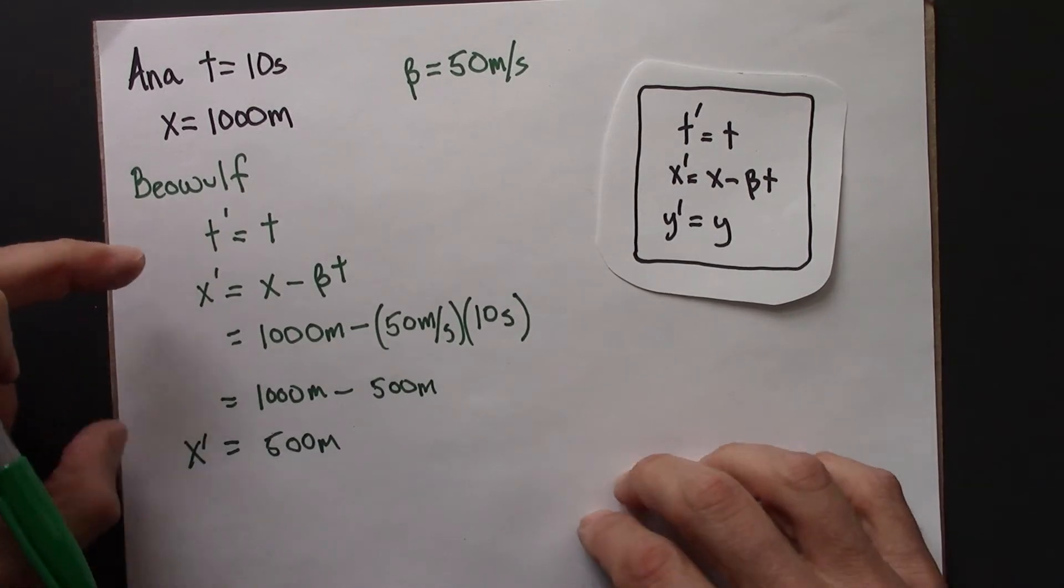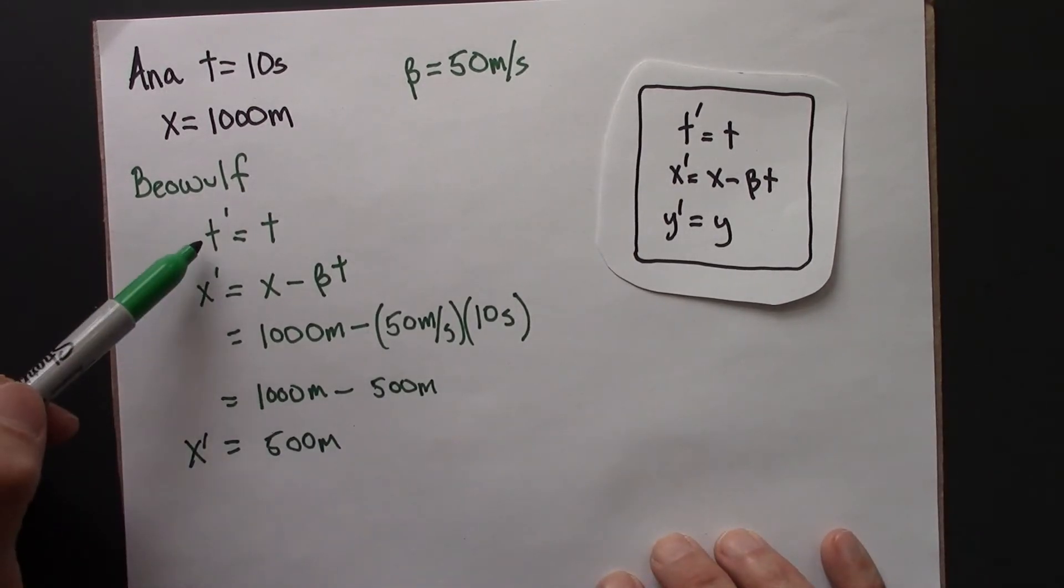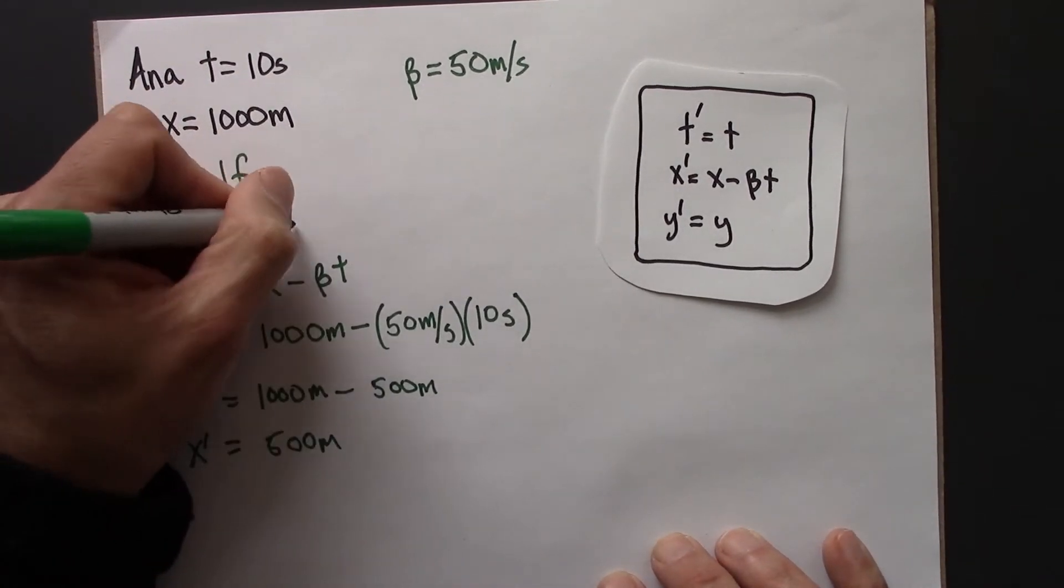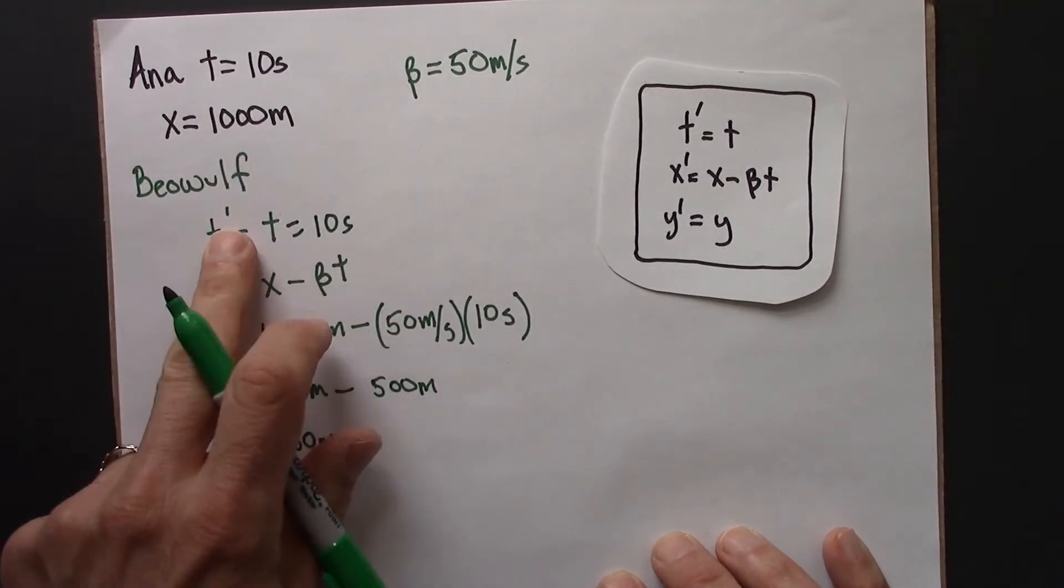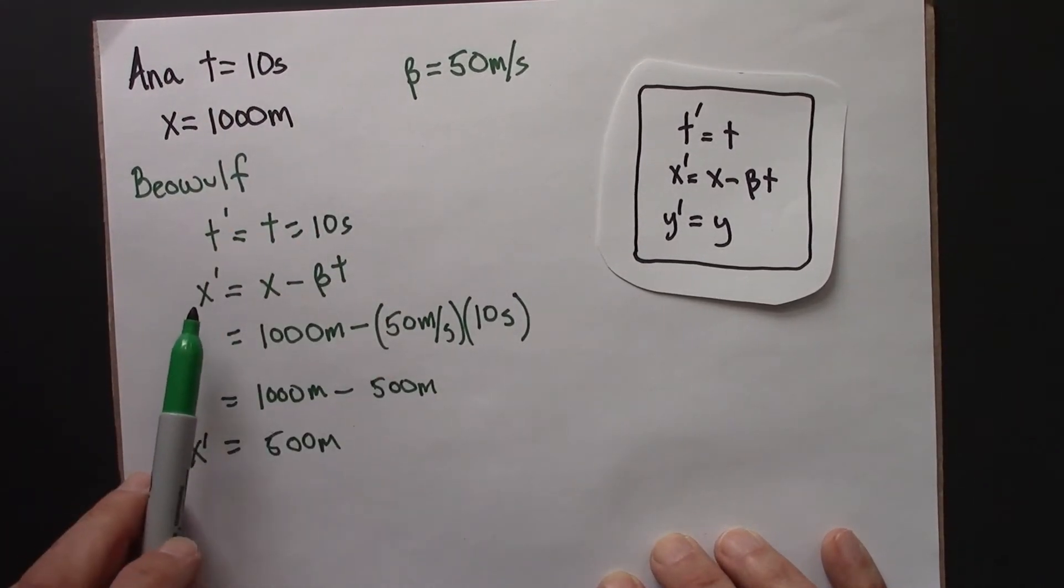So, Beowulf would observe T, that is T, which is 10. So the same time. And then Beowulf's X-position for space-time coordinates would be 500 instead of 1,000.